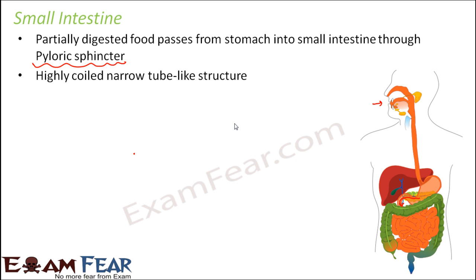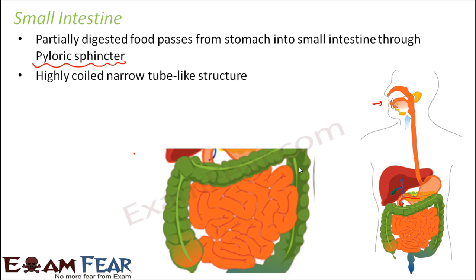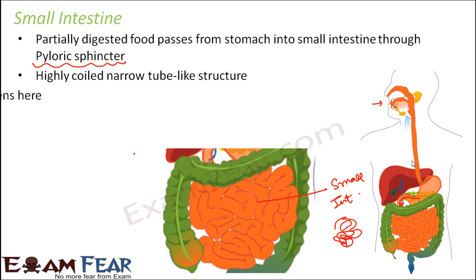Now if you talk about the structure of the small intestine, it is a highly coiled narrow tube. This part here is the small intestine, the orange colored structure. It is a tube-like structure which is highly coiled, similar to how it was in the case of the esophagus but very much more coiled. So that forms the small intestine.